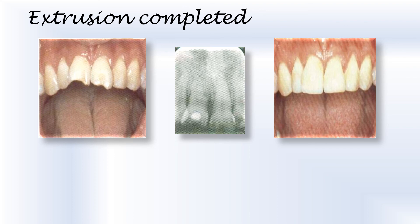After about 4 weeks, it is observed that the intruded tooth gets extruded to its original position. The tooth is maintained in this position for 2-4 weeks, after which the orthodontic appliance can be removed. In the x-ray, it can be seen that the cementoenamel junction of the involved tooth is comparable to and at the same level with that of the adjacent teeth.